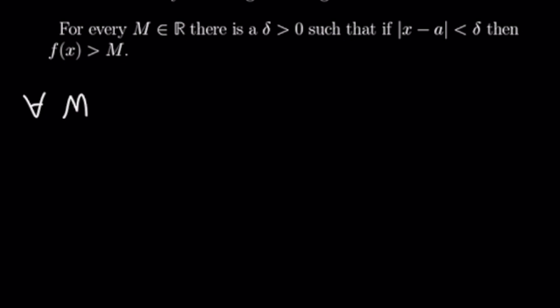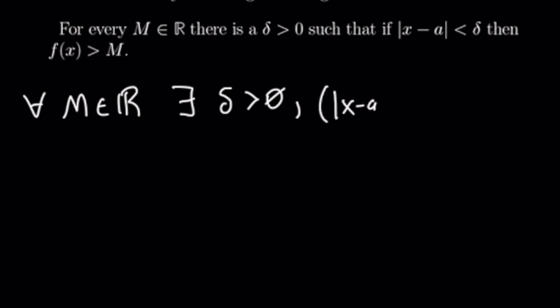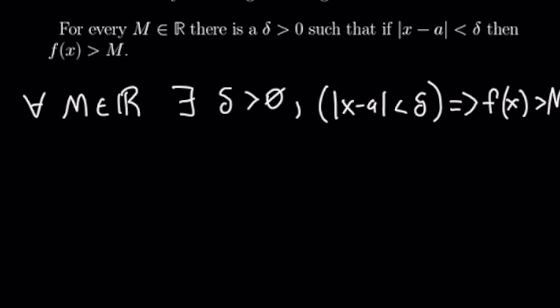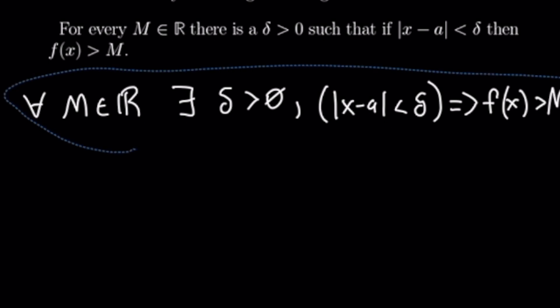So let's go ahead and translate this into symbolic language. We have: for all real numbers m, there exists a delta greater than zero such that the absolute value of x minus a is less than delta implies f of x is greater than m. So I've translated this if-then statement into a conditional.